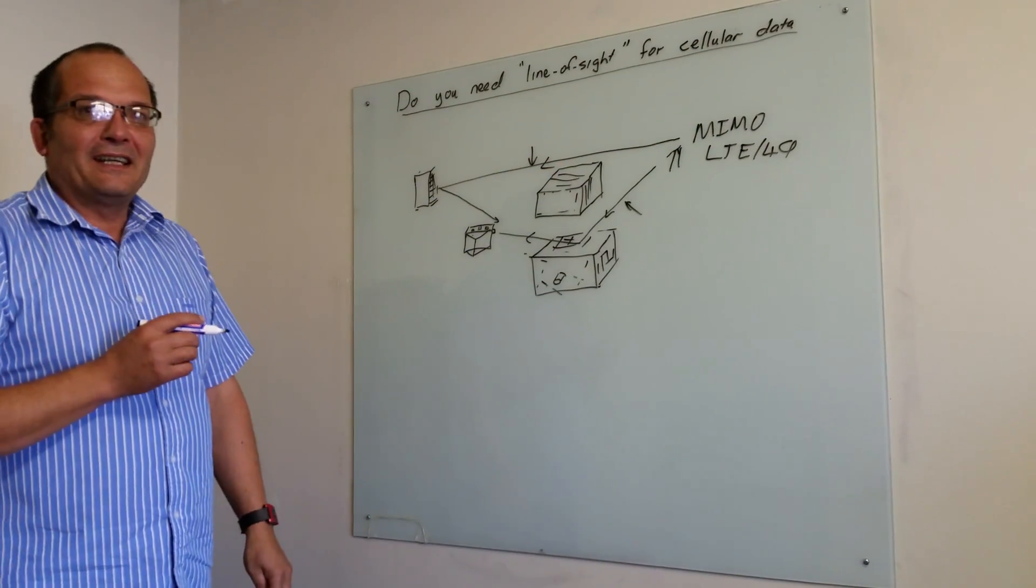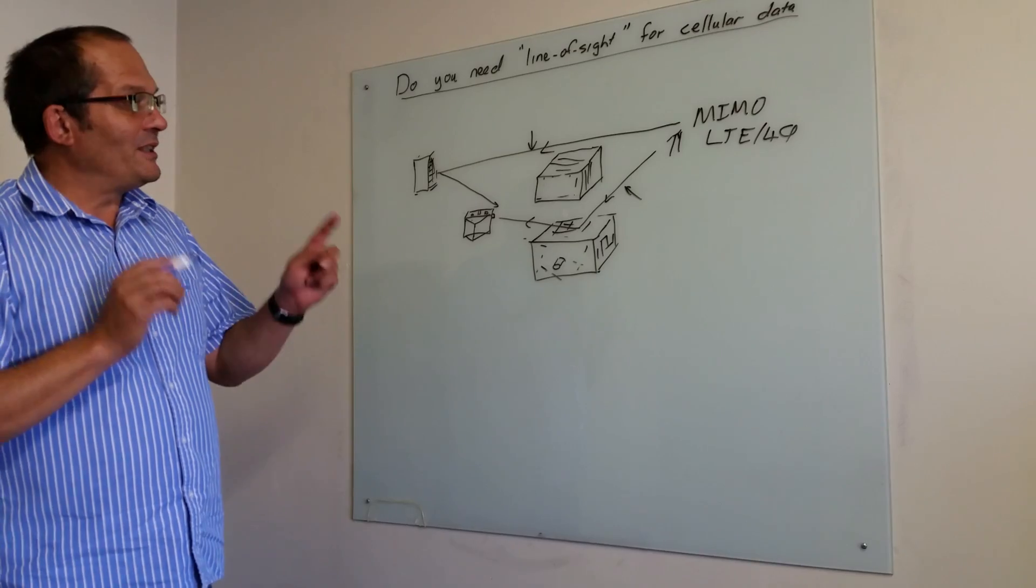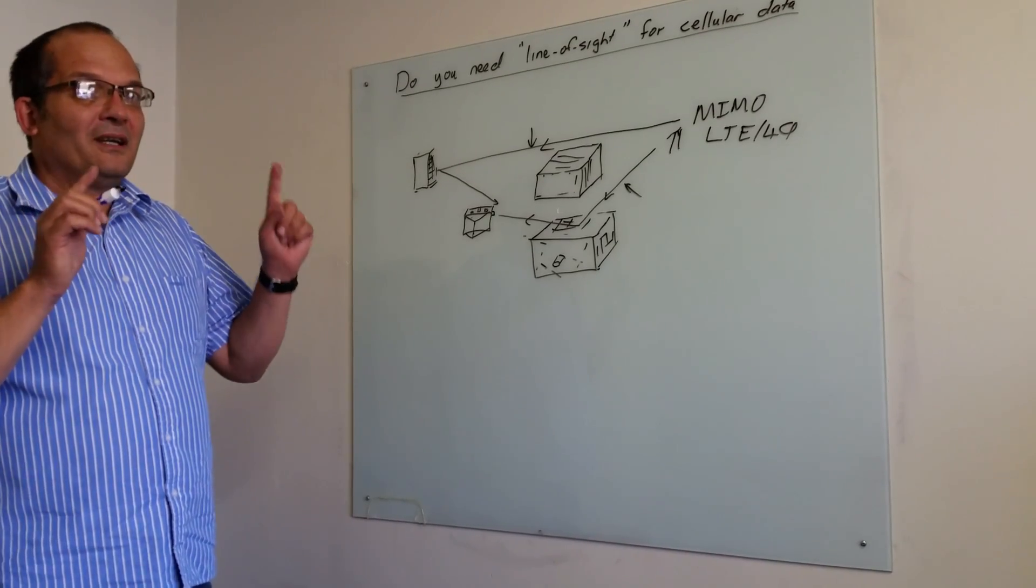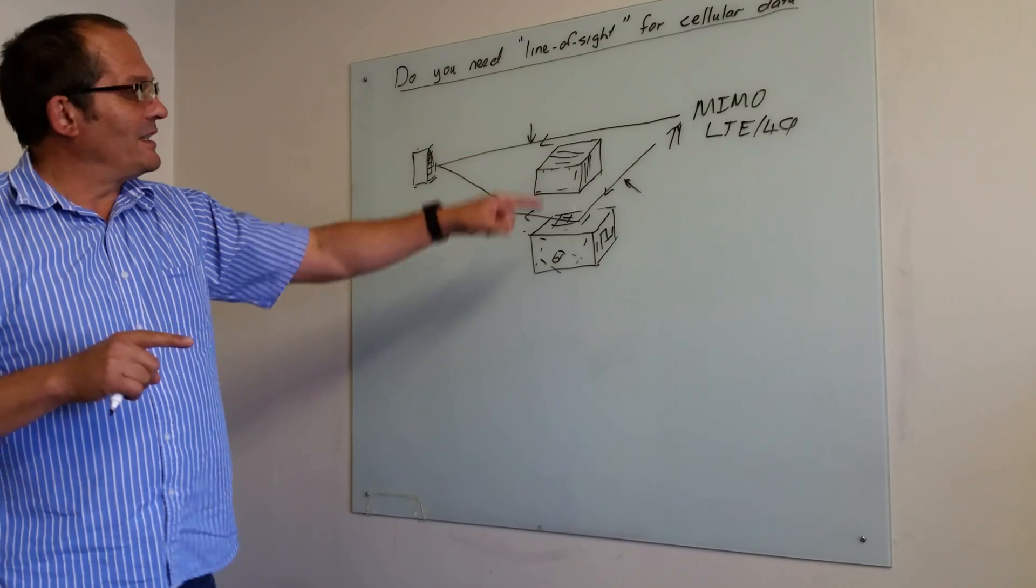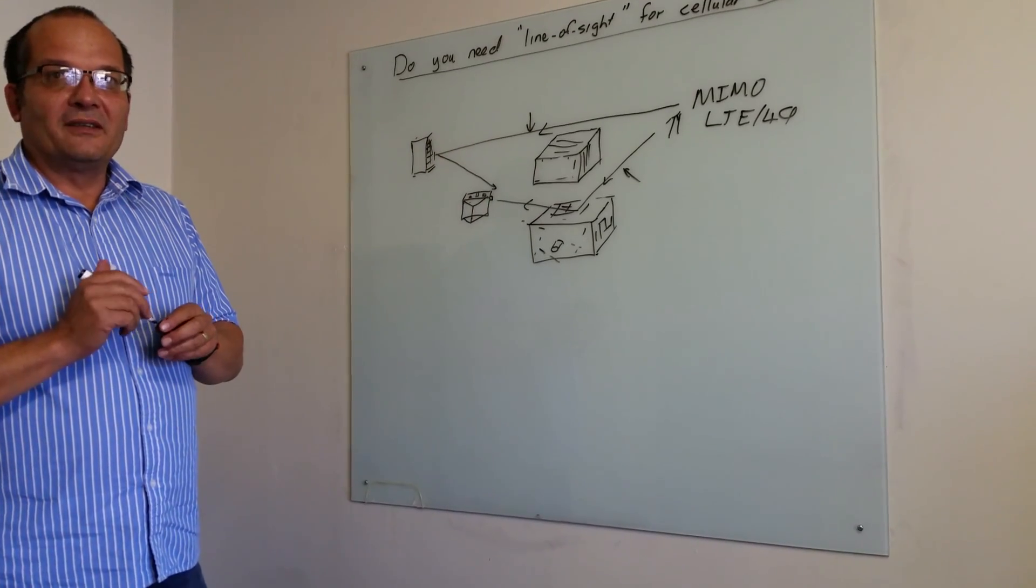And that can actually accelerate, in some cases, your data speed. If you've just got two-by-two MIMO, a straight line with antennas distinguishing in polarization rather than in path will give you a faster and better connection.